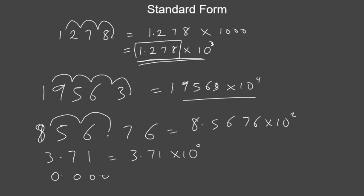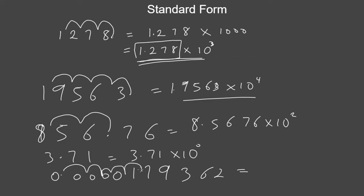For 0.000001793 62, the decimal is to the left of the significant digits, so we move from left to right. Moving left to right gives a negative power. Count the moves: one, two, three, four, five. The answer is 1.79362 times ten to the power of minus five. If you are moving right to left the power is positive; left to right it is negative.